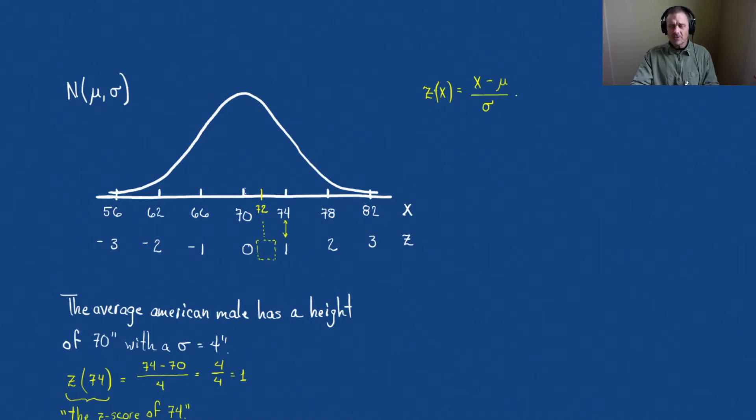The general formula then looks like this. So the z-score for any data value x is equal to x minus the mean divided by the standard deviation. Let's check for a couple more. Let's check 66. 66 should have a negative z-score. The z-score for 66 is 66 minus 70 divided by 4. Well, 66 minus 70 is minus 4 over 4, but that's minus 1, so that's working.